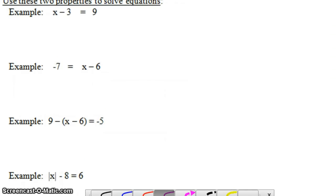Taking a look at these examples, we have x minus 3 equals 9. We want to do the opposite of subtract 3 to both sides of the equation, which is add 3.